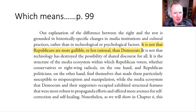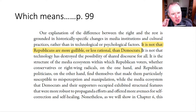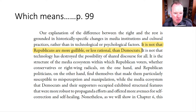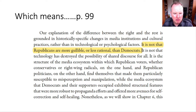As they lay out on page 99, it is not that Republicans are more gullible or less rational than Democrats, nor that technology has destroyed all possibility of shared discourse. Rather, it is the structure of the media ecology within which Republican voters — whether conservative or right-wing radicals, or Republican politicians — find themselves. It is that structure that has made them particularly susceptible to misperception and manipulation, while the media ecology that Democrats and their supporters occupy exhibited structural features that are more robust to propaganda efforts and offer more avenues for self-correction.